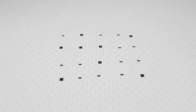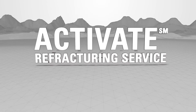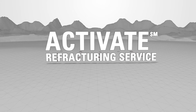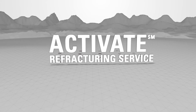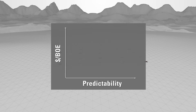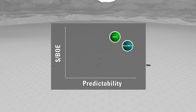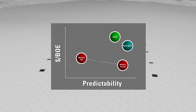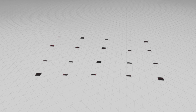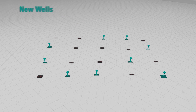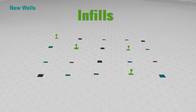But not all refracts are created equal. Introducing Halliburton's Activate Refracturing Service — a collaborative workflow that leverages subsurface insight and breakthrough technologies to help make recovering bypassed reserves both predictable and repeatable. This refracturing service starts a journey from a refract pilot to building a balanced portfolio of new wells, infills and refracts.